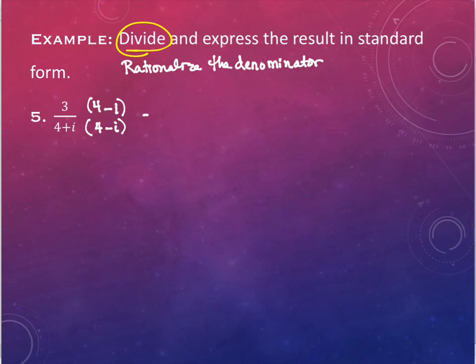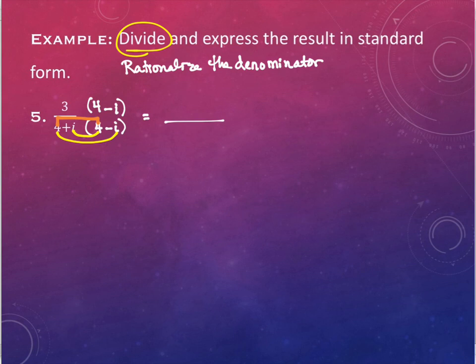So in the denominator as I do this, the inside and outside terms cancel. One of them is negative 4i, the other is positive 4i — they're going to go away. The only parts I'm going to have are the first pieces and the last pieces. The first pieces multiplied are going to give me 16. The last pieces multiplied are going to give me minus i squared.